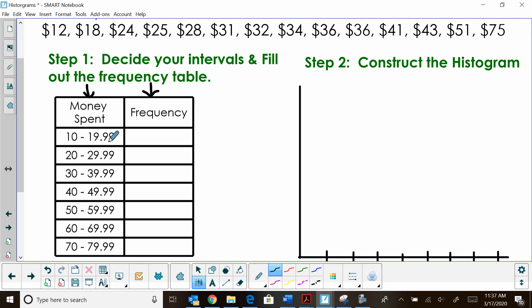So I'm going to create 10 to $19.99. That's my first interval. Then I'm going to go 20 to 30, but I don't want to overlap. So I have to make that $29.99 and then 30 to $39.99, 40 to 49, all the way up, all the way to 70 to 79. Why do I have to go that far? Because my highest value is $75. So now I'm going to take my data and I'm going to create a frequency table.